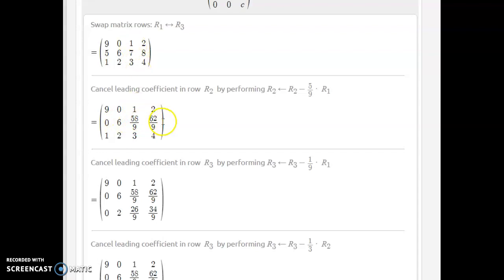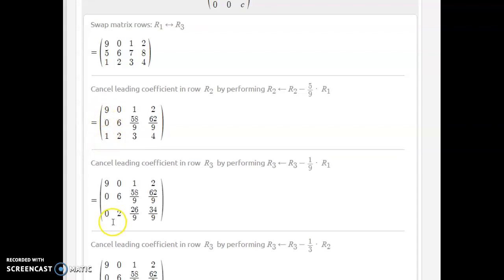Of course it becomes complicated because we're gonna have these fractions. Next thing to do is trying to get a zero here. It's gonna be easy, multiply the first one times negative one ninth and add it and you get a zero there. But of course you have to do it to each single one here and this is what you get.